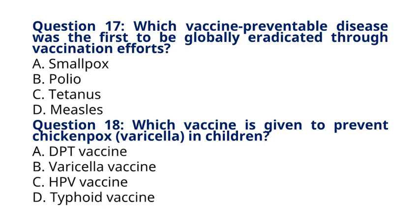Question 18. Which vaccine is given to prevent chickenpox, varicella, in children? A. DPT vaccine. B. Varicella vaccine. C. HPV vaccine. D. Typhoid vaccine. The correct answer to question 18 is option B, varicella vaccine. The varicella vaccine is administered to provide immunity against the varicella zoster virus, which causes chickenpox.